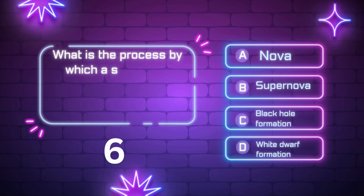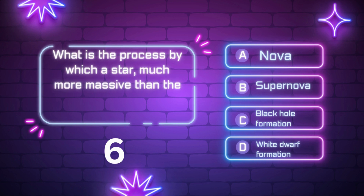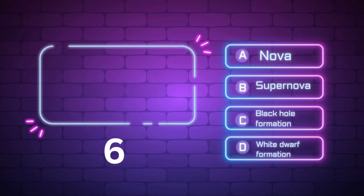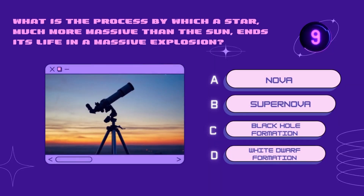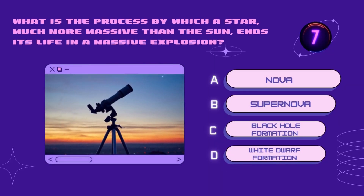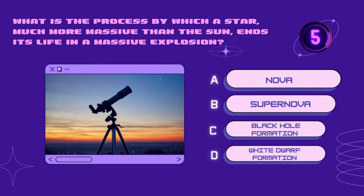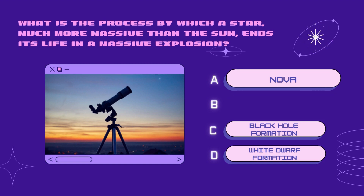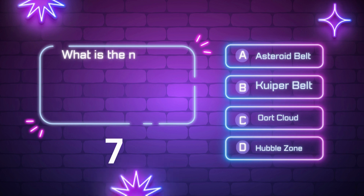What is the process by which a star much more massive than the sun ends its life in a massive explosion? Nova, supernova, black hole formation, white dwarf formation. Your time starts now. Right answer is Supernova.